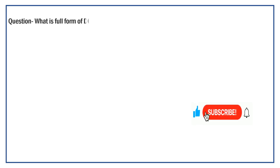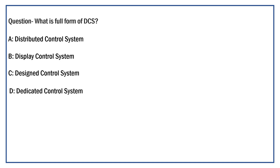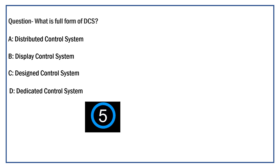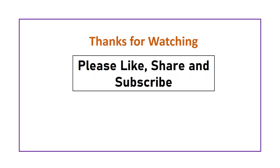What is the full form of DCS? Option A: Distributed Control System. Option B: Display Control System. Option C: Design Control System. Option D: Dedicated Control System. The right answer is Option A: Distributed Control System.